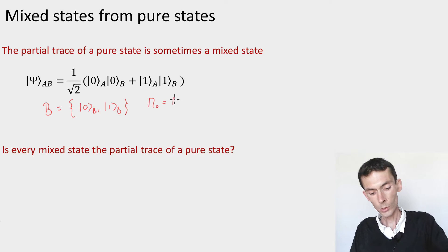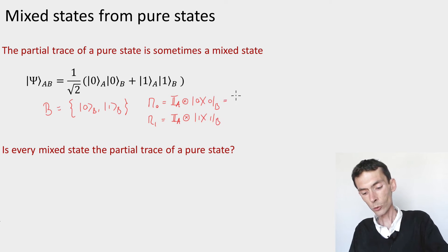So this would be M0, which is the identity on A, tensored rank 1 projection on 0 for B, and M1, which is the identity on A, tensored the rank 1 projection on 1 for B. We can choose as Kraus operators the same as the M's, because they're projectors. This lets us compute the reduced densities.